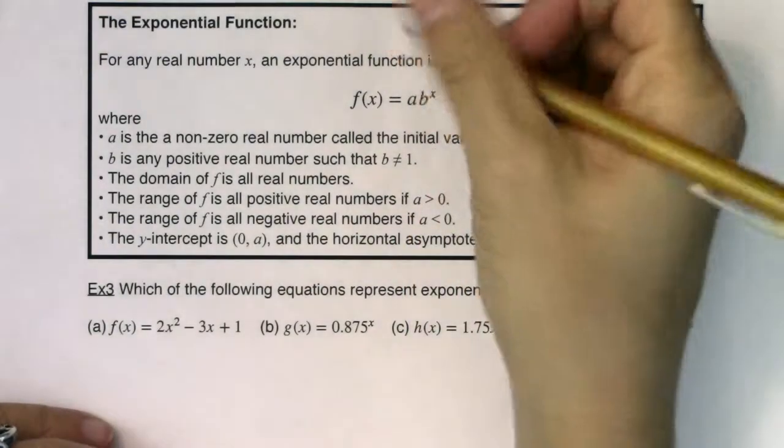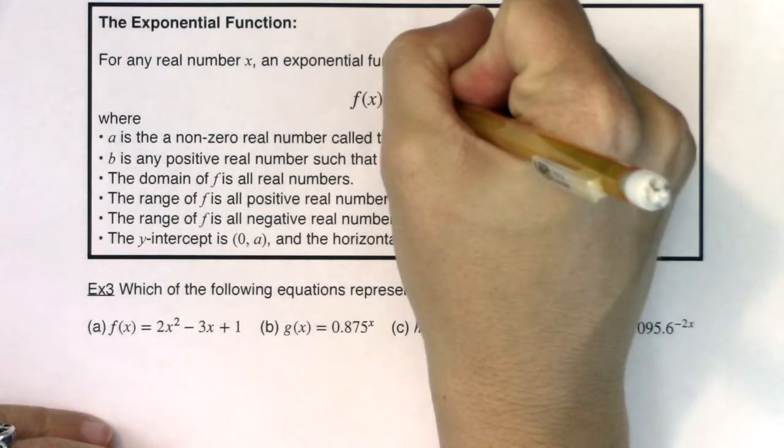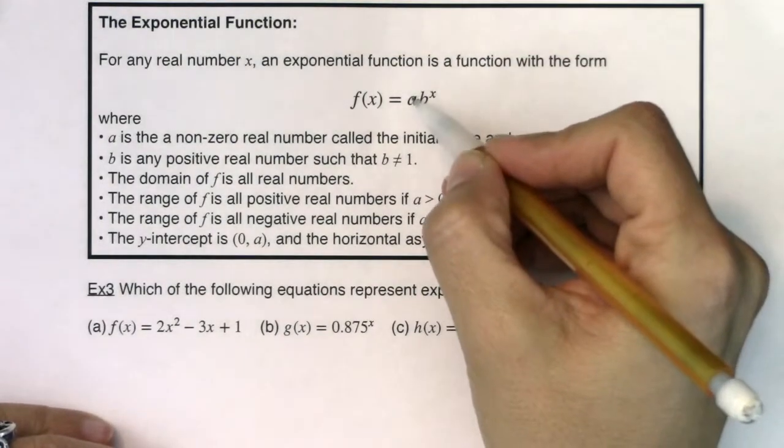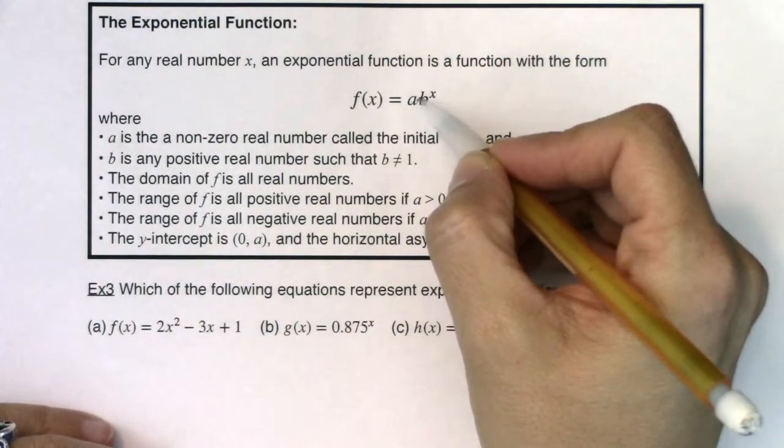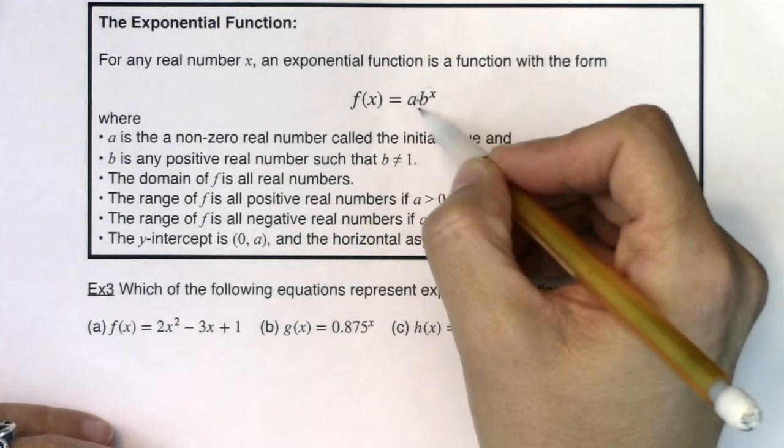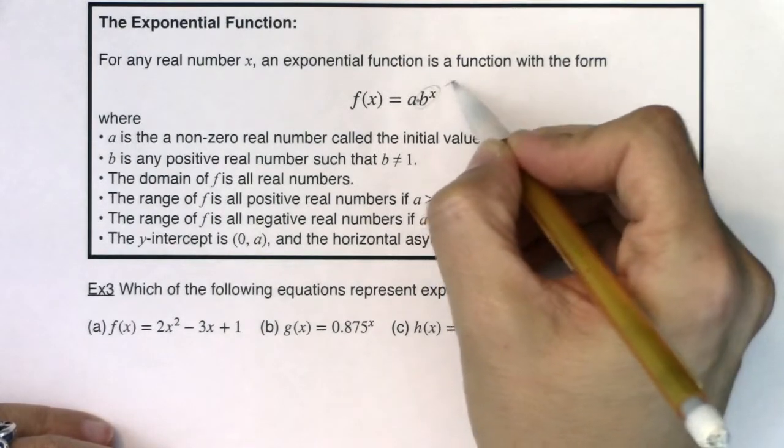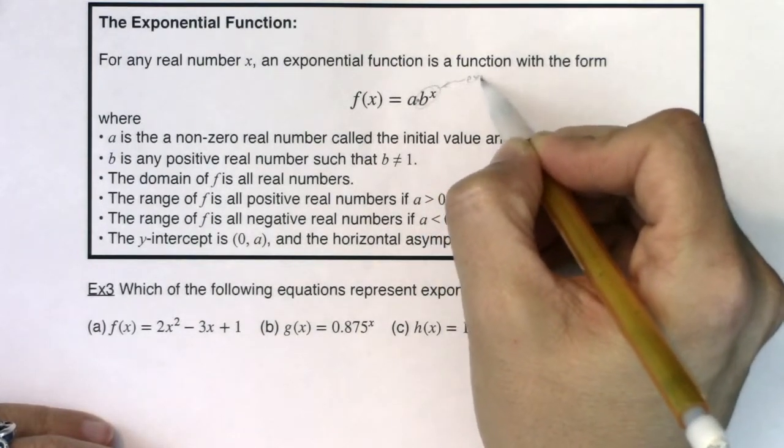So this a out here is a little constant, there's multiplication there. So here's your lead coefficient and then b to the x. This term right here is the power. This is technically the exponent.